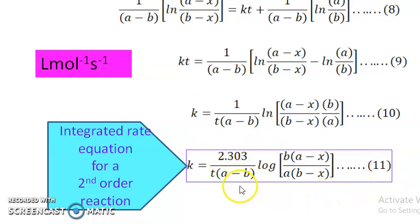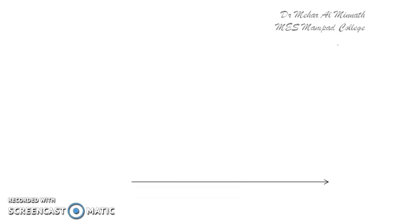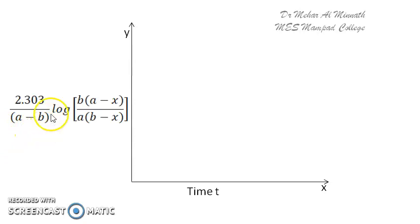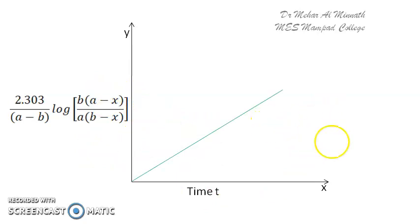The derivation is straightforward — a bit more terms are involved but the arithmetic is simple. For the graphical representation, plotting time on the x-axis and 2.303/(a − b) × log[b(a − x)/a(b − x)] on the y-axis gives a straight line passing through the origin with a positive slope. The slope of this line gives the value of K.